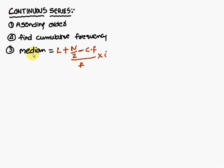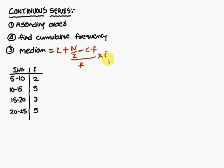Third is the median formula: L plus N by 2 minus cumulative frequency by F into I. Given data, the problem has an interval 5 to 10 with frequency 2, 10 to 15 with frequency 5, 15 to 20 with frequency 3, and 20 to 25 with frequency 5.